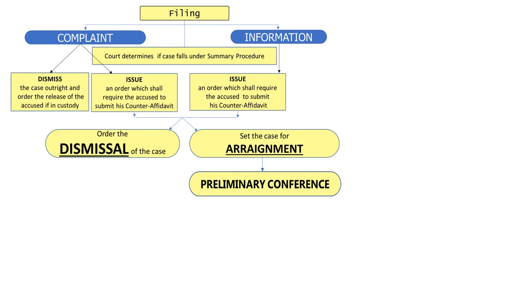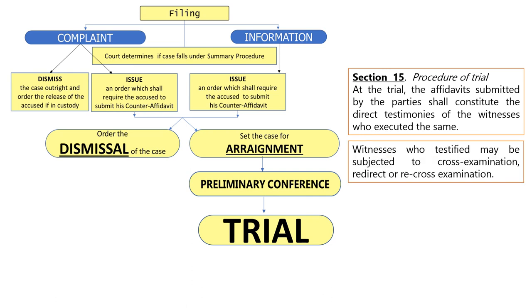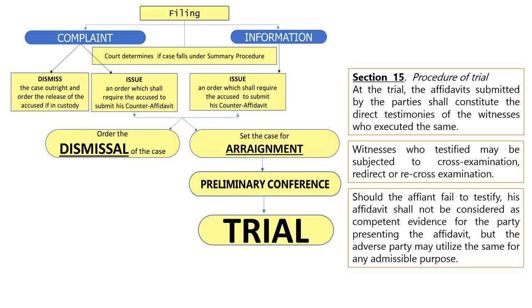After preliminary conference is the trial. At the trial, the affidavits admitted by the parties are considered as the direct testimony of the witnesses who executed the same, in lieu of direct testimonies. The witnesses who testified may be subjected to cross-examination, redirect examination, or re-cross-examination. But if the affiant fails to testify, the affidavit will be wasted — it will not be considered competent evidence for the party presenting it. However, the adverse party can utilize that affidavit for any admissible purpose.